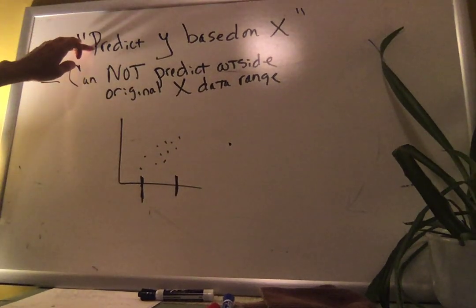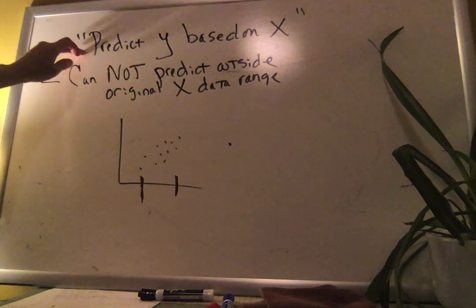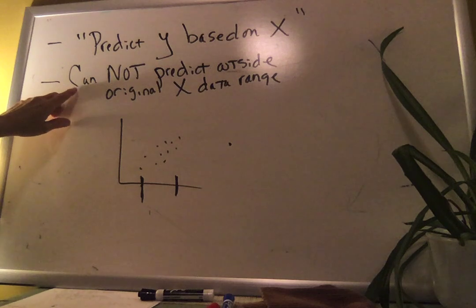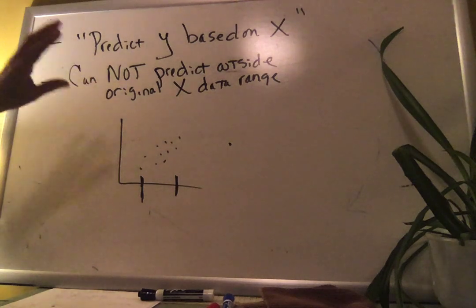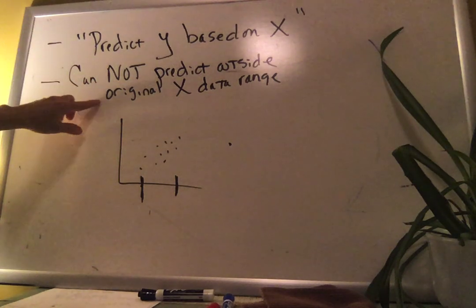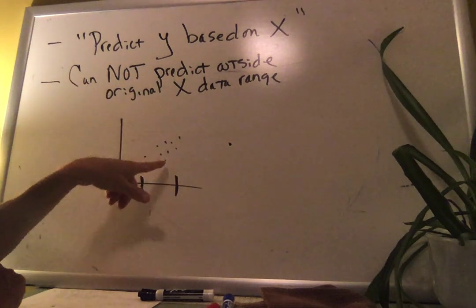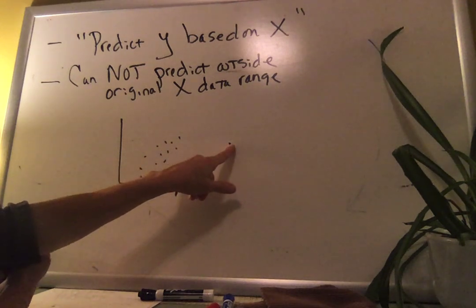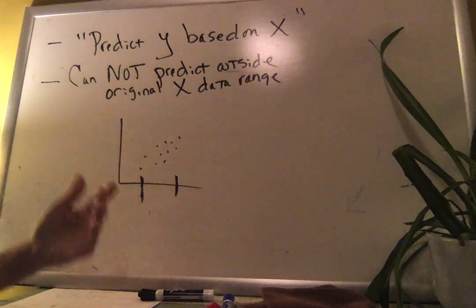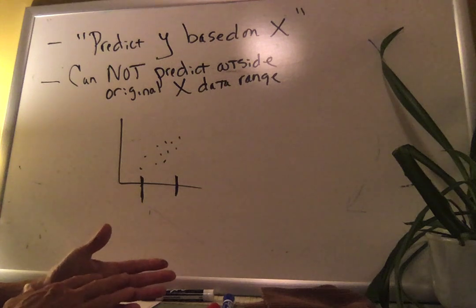We predict Y based on X and we're going to use it for prediction purposes for data we haven't already studied, but with a restriction: you cannot predict outside the original X data range. Let's say you had study data between these two X values — you're not allowed to predict for a data point way out here, because you don't know that the trend will continue. That's called extrapolation.